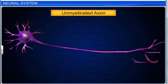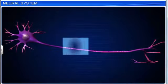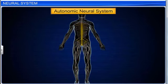Unmyelinated nerve fiber is enclosed by a Schwann cell that does not form a myelin sheath around the axon. Nodes of Ranvier are absent. These fibers are found in the autonomic and somatic neural systems.